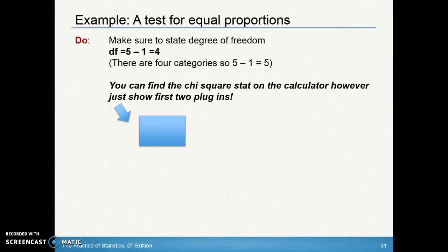Now the do portion is easier than what we've done in the past. So the first thing you want to make sure you do is state your degrees of freedom, it's always the number of categories minus one. Then you're going to find your chi-square statistics and your p-value. But keep in mind your chi-square statistic, you're going to get all of that from your graphing calculator.